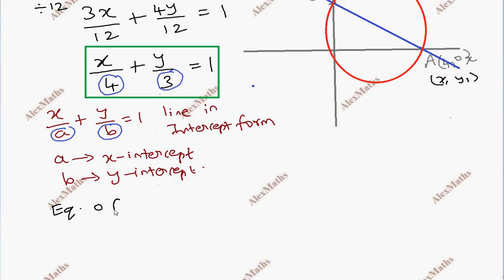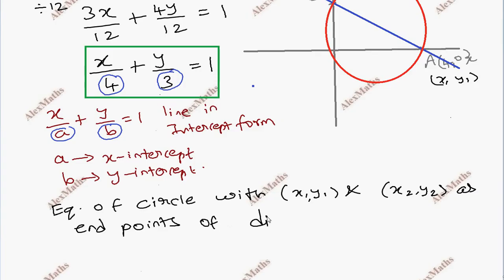Equation of circle with x1, y1 and x2, y2 as endpoints of diameter. That is the equation x-x1 into x-x2 plus y-y1 into y-y2 equal to 0.